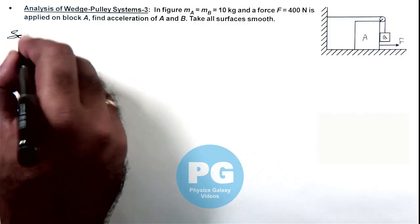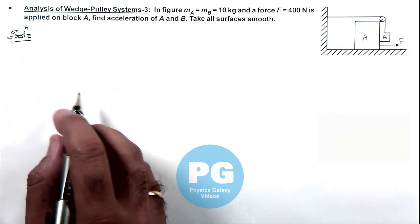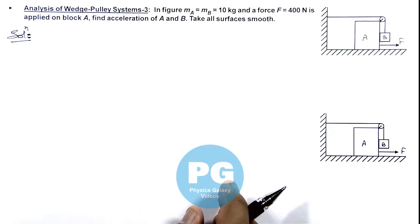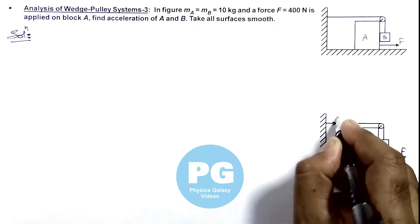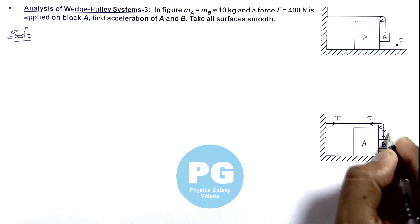So here in solution we first distribute the forces. In this situation let's have a look on this picture. Here if we consider the tension in string is T, then for case of an ideal string tension is same throughout.